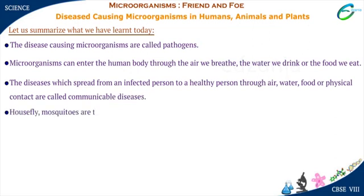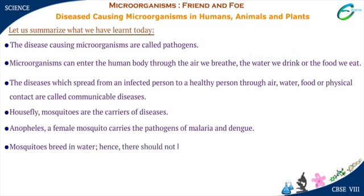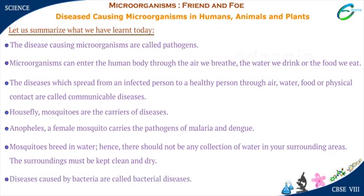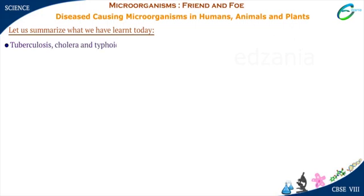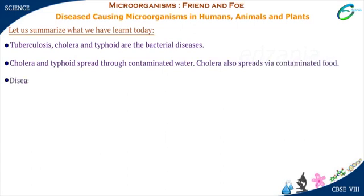Houseflies and mosquitoes are carriers of diseases. Anopheles, a female mosquito, carries the pathogens of malaria and dengue. Mosquitoes breed in water, so there should not be any collection of water in surrounding areas and surroundings must be kept clean and dry. Diseases caused by bacteria are called bacterial diseases. Tuberculosis, cholera, and typhoid are bacterial diseases. Cholera and typhoid spread through contaminated water, and cholera also spreads via contaminated food.